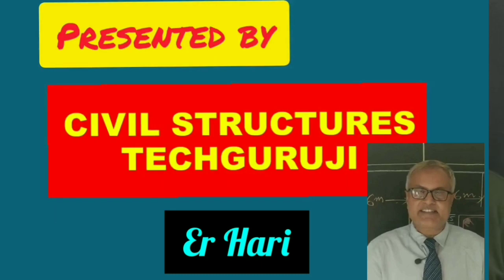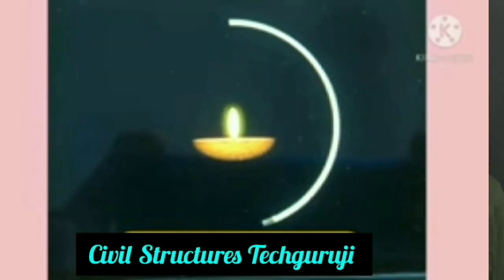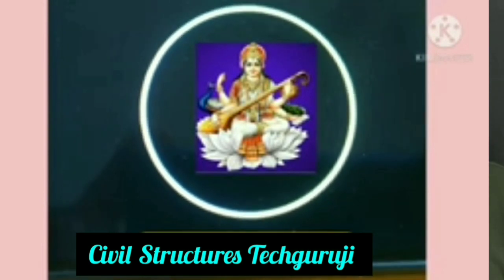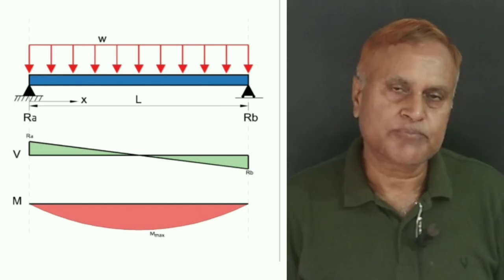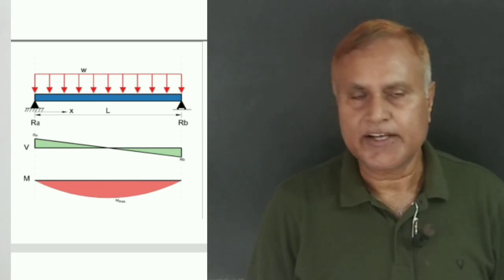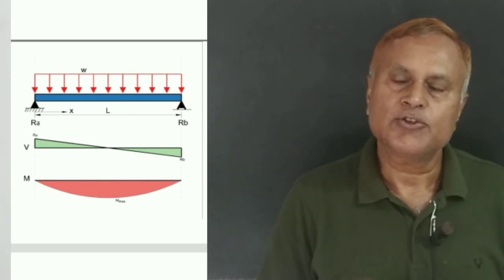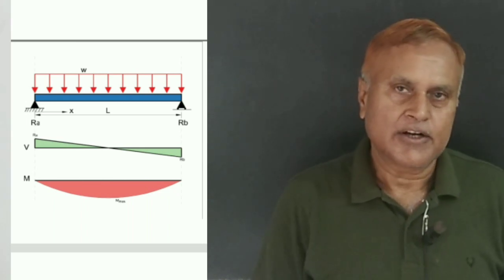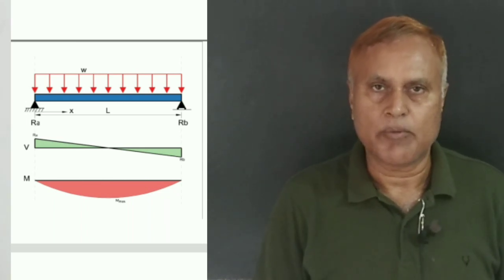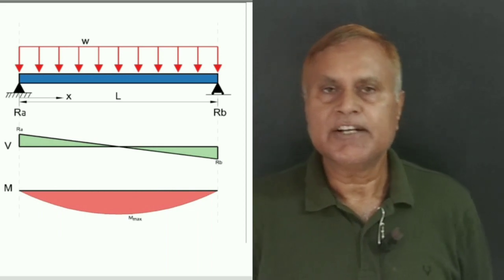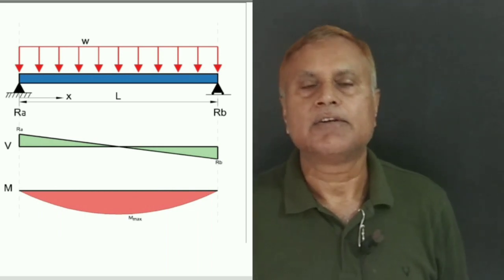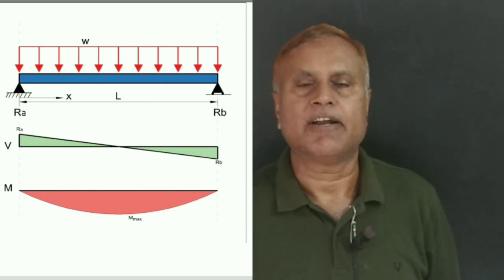I highly recommend all my page visitors and subscribers to watch the full video for better understanding. In this video, I am going to explain that for a simply supported beam subjected to a uniformly distributed load over the whole beam, the maximum bending moment is WL²/8. Since simply supported beams are free to rotate at the ends, the bending moment at both ends is zero.